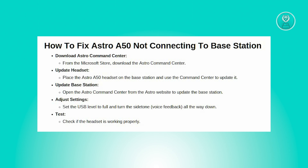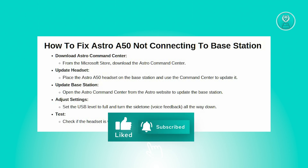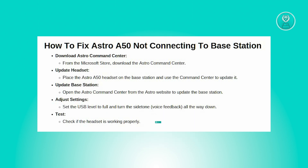After updating the headset, the base station might not update automatically. Minimize the Microsoft Store version of Astro Command Center and use the Astro Command Center from the Astro website instead. Open the Astro Command Center application that you downloaded from the Astro website — you should have both versions open alongside each other. This version should allow you to update the base station. Follow the prompts in the Astro Command Center to update your base station, as this step is crucial since it might not be updated by default.